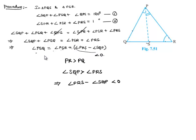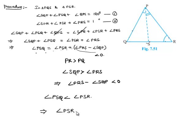So in the equation, angle PSQ equals angle PSR plus the term (angle PRS minus angle SQP), and since that term is less than zero, it follows that angle PSQ is less than angle PSR. Therefore, angle PSR is greater than angle PSQ, which is what we required to prove.